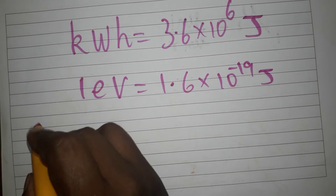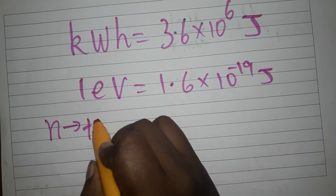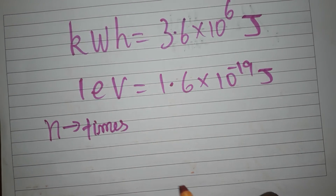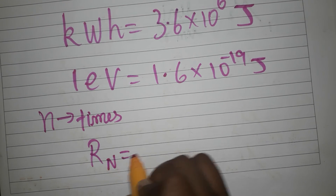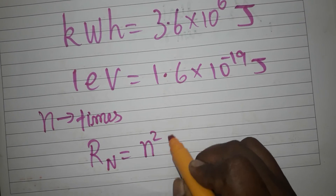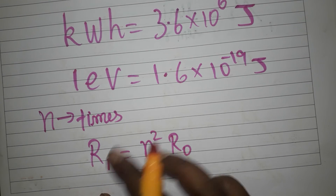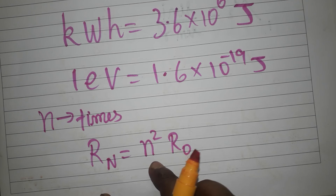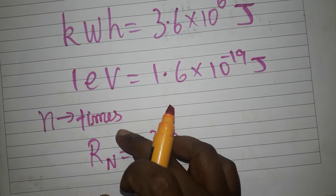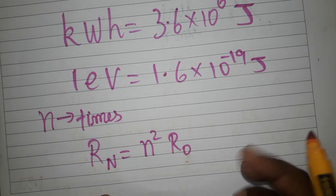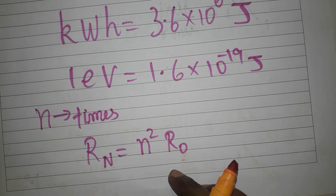A very important concept: if a wire is stretched N times, the new resistance is equal to N-squared times the old resistance. For example, if stretched double (2 times), the new resistance is 4 times (2²) the old resistance. If stretched 3 times, it becomes 9 times (3²) the old resistance.